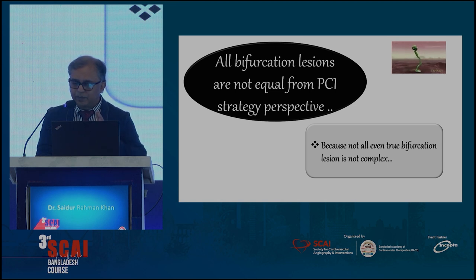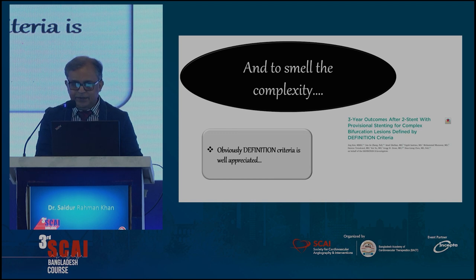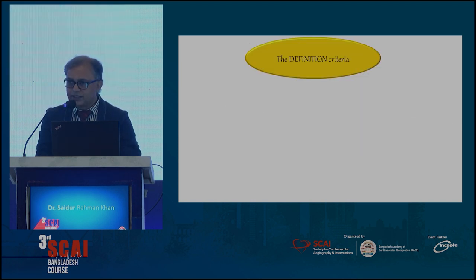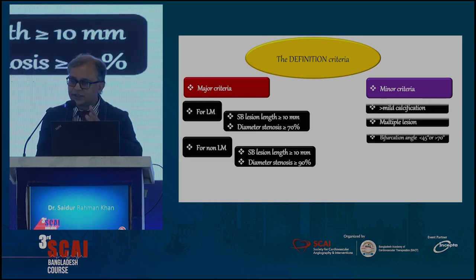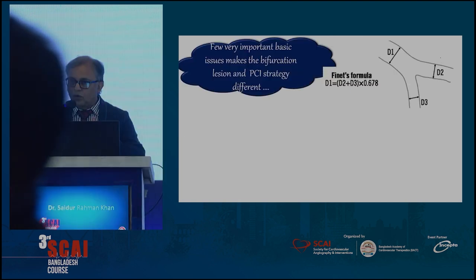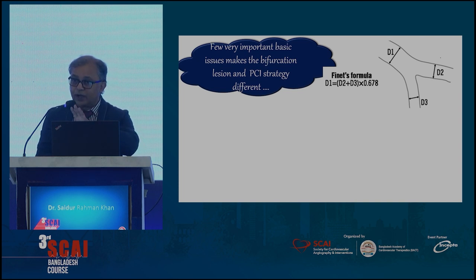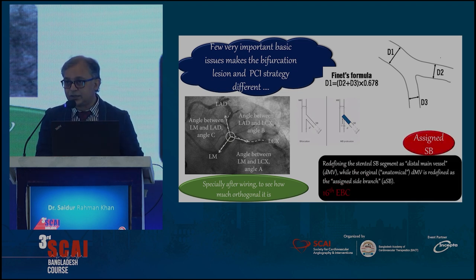All bifurcation lesions are not equal from a PCI strategy perspective either, because not all true bifurcation lesions are complex. To assess that complexity, you have the definition criteria: there are some major criteria and six minor criteria. If you have one major and two minor criteria, you can define it as a complex lesion. A few very important basics you have to remember — like considering Finet's formula and angulation — because these cause shifting of techniques.